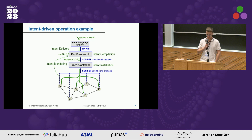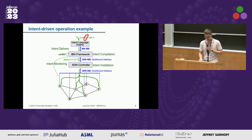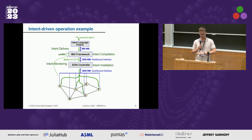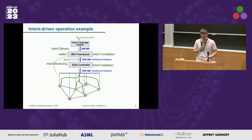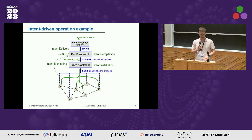Here I have an example of that. Given a simplistic network, a connectivity intent comes in with the desire to connect node A to node F. This will go through the intent language engine and eventually land in the IBN framework, where intent compilation will take place. Compilation has nothing to do with language compilation, as this conference might know better — it's just about taking a high-layer intent and finding an implementation for it. In this simplified example, it will output the ACDF path, which will be forwarded to the SDN controller where intent installation will take place, pushing appropriate configurations to the network devices.